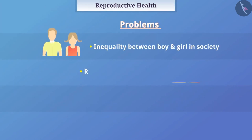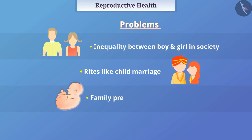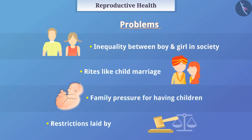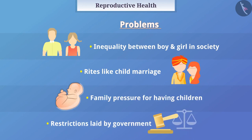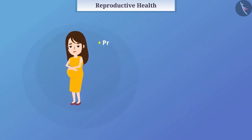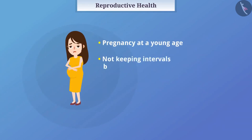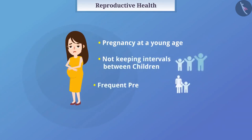There can be many problems related to reproductive health such as inequality between boy and girl in society, issues like child marriage, family pressure for having children, restrictions laid by government, pregnancy at young age, or not keeping intervals between children.